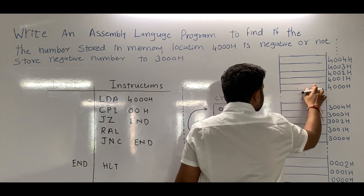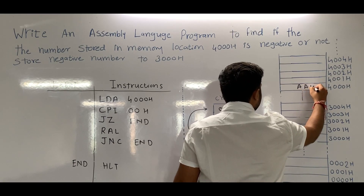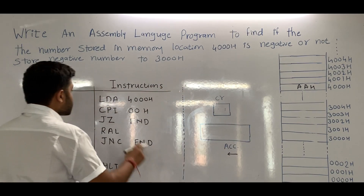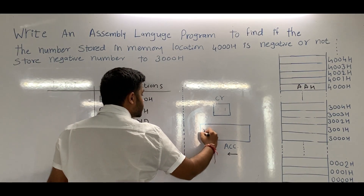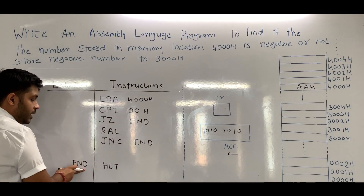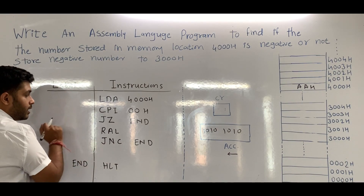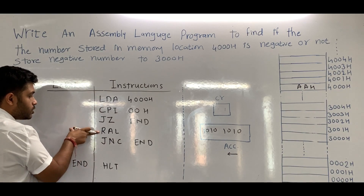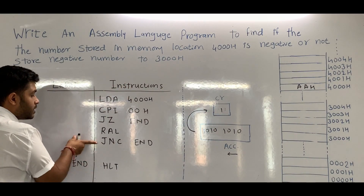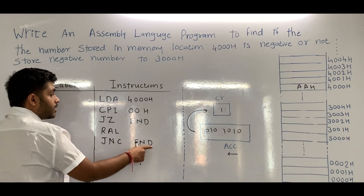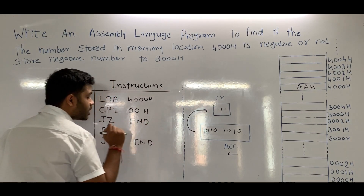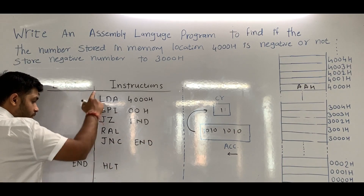Now let's see the third case: suppose the number stored is negative, for example AAH. Starting from the beginning: LDA 4000H moves AAH to the accumulator. After CPI 00H, the zero flag will not be set so we will not jump to end. The sequence continues and RLC is executed. When RLC is executed, the carry flag gets 1. After rotating, since carry is generated, the JNC END instruction will not jump to end — instead we follow the sequence.